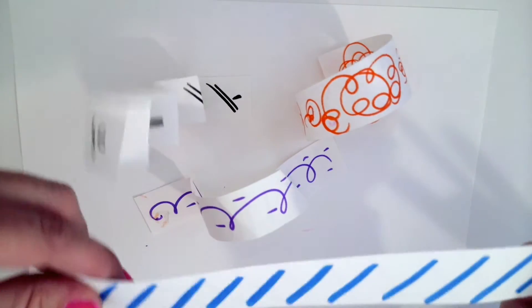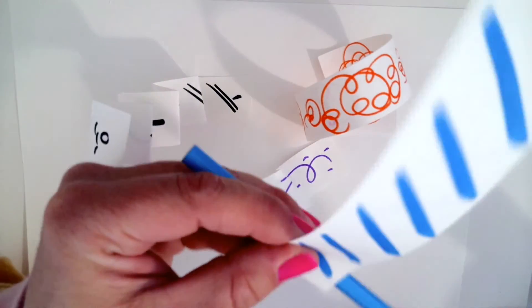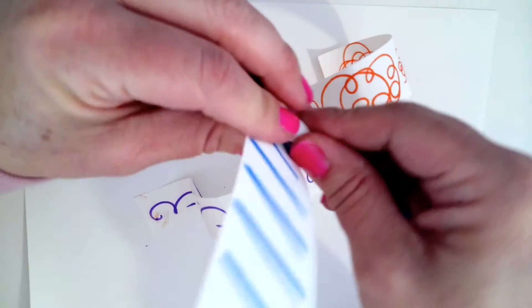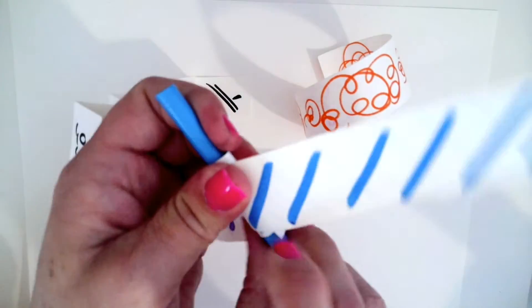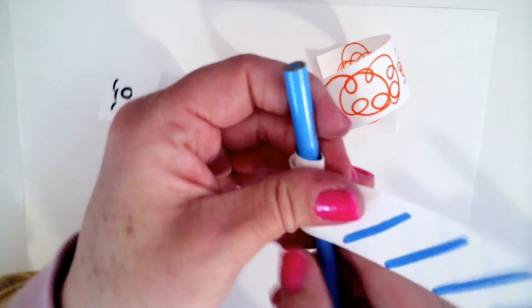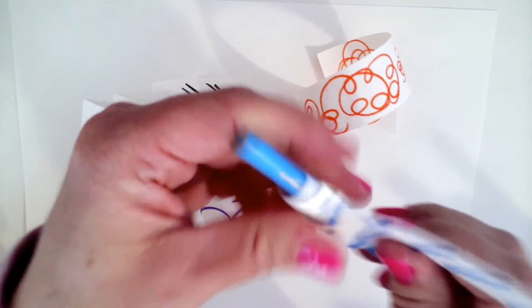Next, I'm going to do one around a pencil. And you'll see that this spiral will be smaller. Wrap it around my pencil. And then let go.